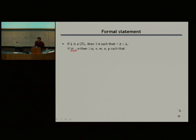These five parts—U, V, W, X, Y—put together give you z. The middle three parts together are not very long. The V and X together, important thing to note, together are non-empty. One of them could be empty, but not both. And for all i, you can repeat V and X i number of times, and you'll still get a word in the language.